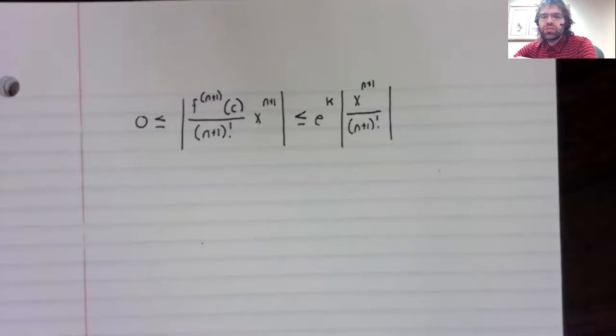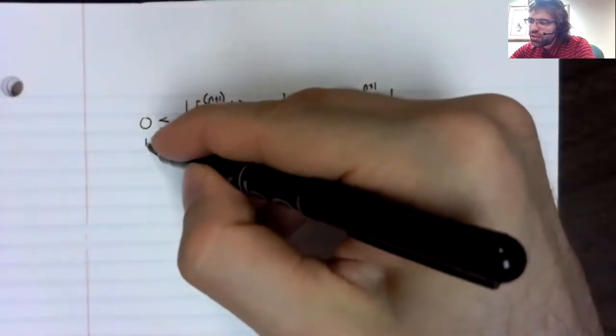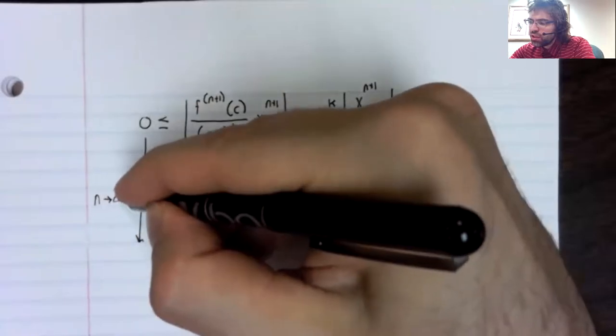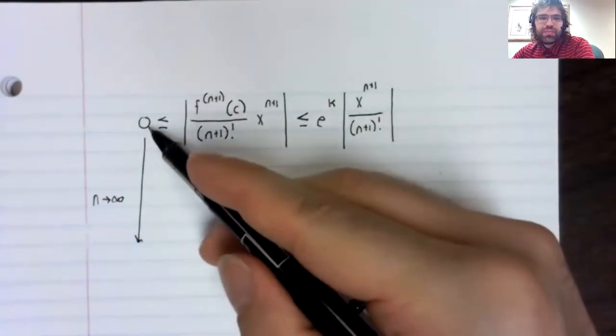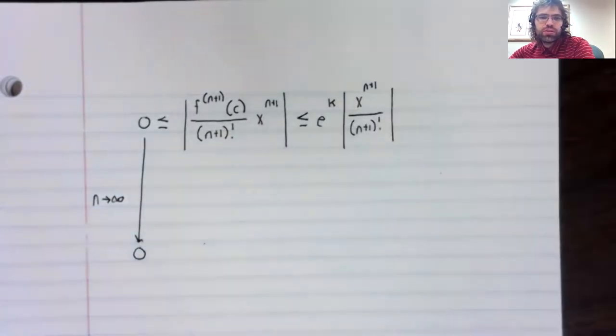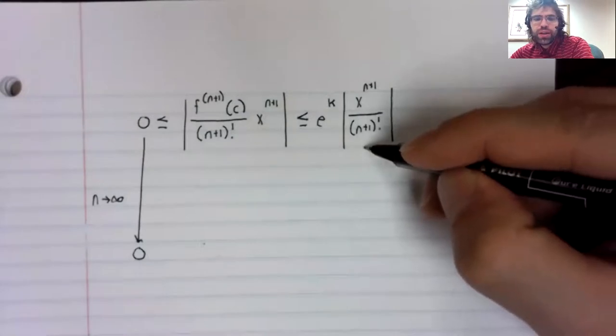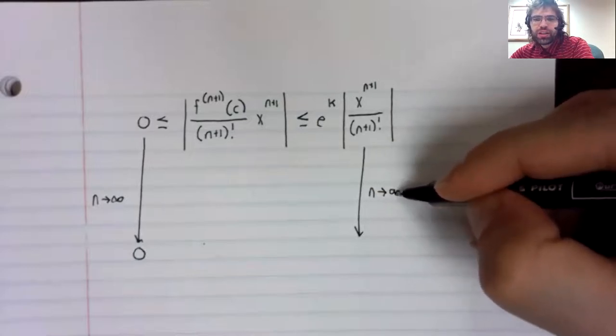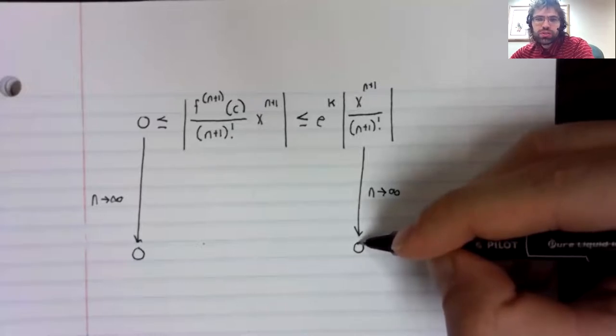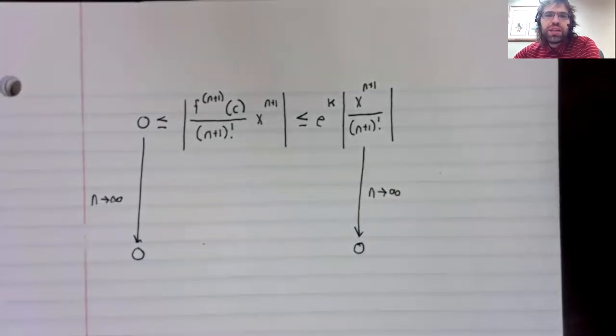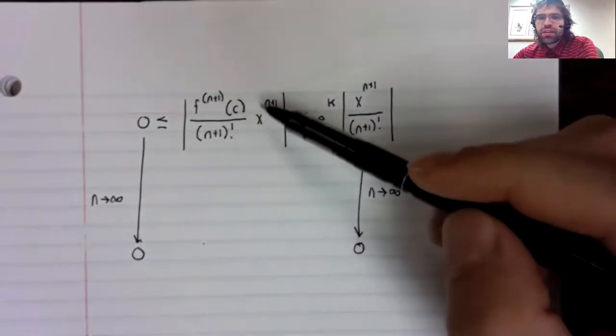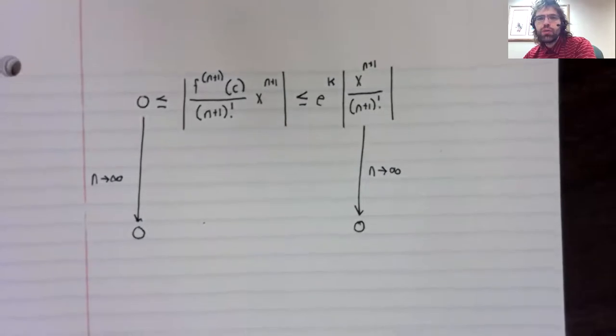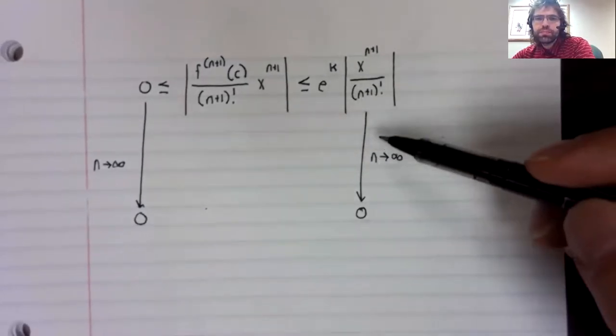We have this string of inequalities. And clearly, as n goes to infinity, zero goes to zero. If, as n goes to infinity, this also goes to zero, then the squeeze theorem says that this expression that's stuck between them must go to zero as well.